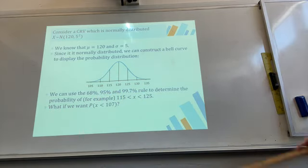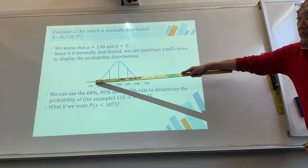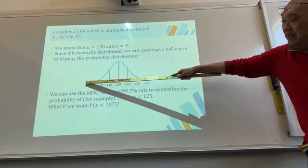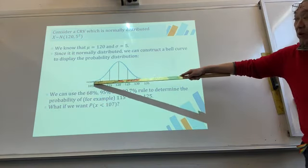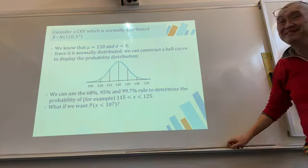But what if we want something like P(X < 107)? That doesn't fall neatly at a standard deviation boundary, so how do we calculate it?